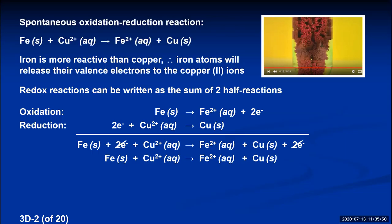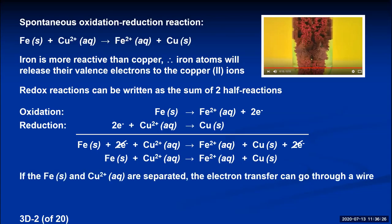Oxidation-reduction reactions consist of two half reactions, and throughout this chapter we'll express them that way. Here's where electrochemistry comes in: if I take the iron and the copper²⁺ ions and do not put them in the same beaker, this reaction cannot happen directly. But if I separate them in a way that allows electrons to transfer from the iron to the copper ion through a wire rather than directly on the surface, I can actually get electricity to be produced from a redox reaction. Electrons moving through a wire is called electricity.